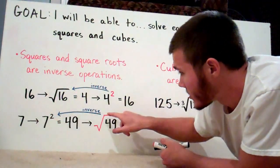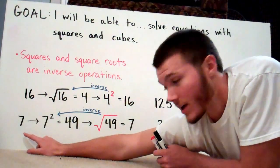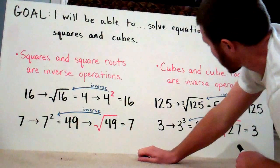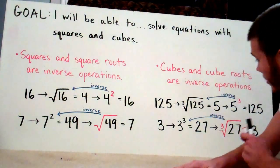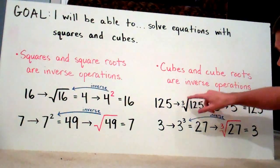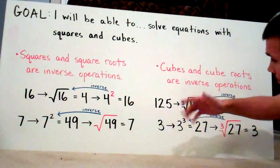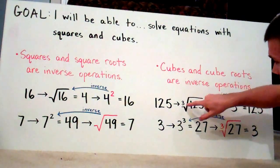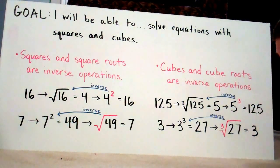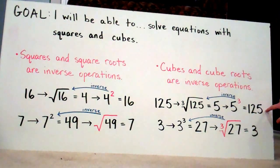Cubes and cube roots, exact same thing. If we have 125 and we find the cube root of 125, that's going to be 5. If I want to go back to the original number, I have to use the inverse operation of cube root, which is cubing it. So 5 cubed, which is 5 to the third power — 5 times 5 times 5 — you get your original number, 125.